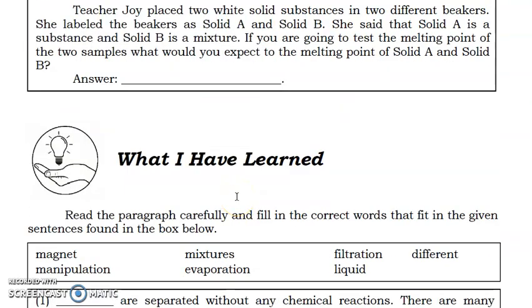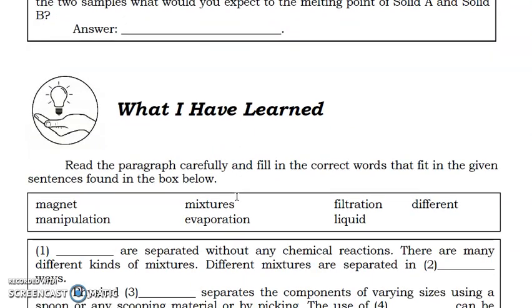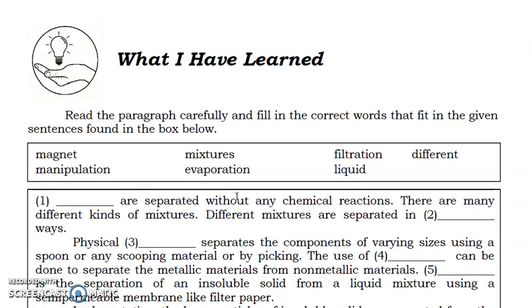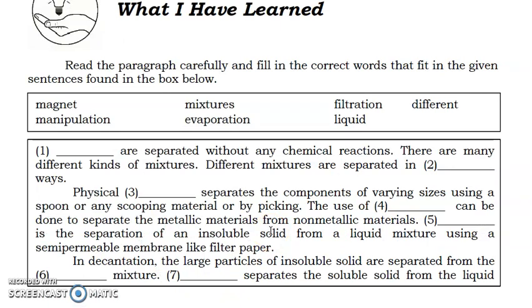Then, let's proceed to What I Have Learned. So, siguro, kabisado nyo na. So, in What I Have Learned, you're going to read the paragraph carefully and fill in the correct words that fit in the given sentences. So, makikita yun sa loob ng box. Ito yung pag-tipilian para masagutan ang What I Have Learned. So, ito ay pang seventh activity in our lesson number two.